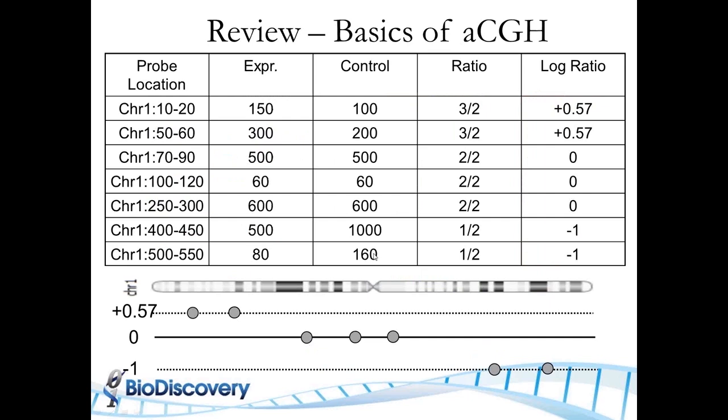If you look at the actual numbers for the measurements, not the colors, in the experiment channel you end up with some measure, let's say 150, and in the control it would be 100, so you have a ratio of 3 over 2, or we work in a log2 space, so the log2 of that is 0.57. For the next probe, you have 300 over 200, same ratio, 0.57. When you have equal amount in both channels, the log ratio becomes zero, and if you have less in your test than in your control, you end up with a negative log ratio.